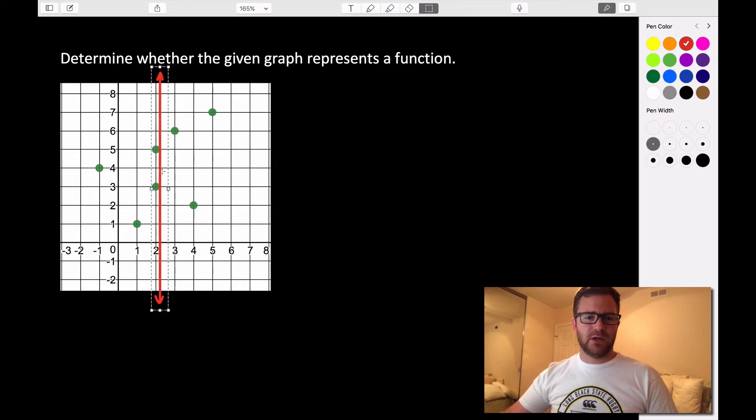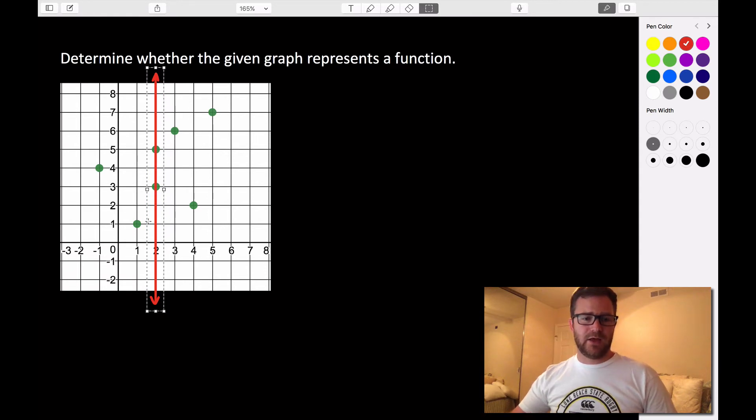So far we've been good, but you can see that when we get to here at x equals two, our graph intersects two points—the red line intersects two points on our graph. So we have to say that this is not a function.